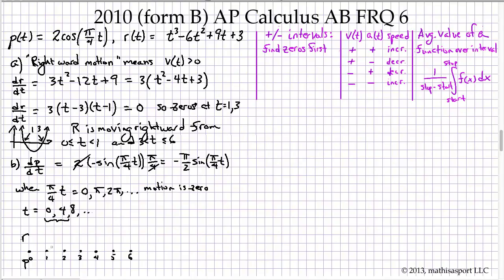Now, what did we learn about R? We learned that R was positive from 0 to 1. It was also positive from 3 to 6. And therefore, it was negative from 1 to 2 and 2 to 3. With P, on the other hand, we have negative values 0 up to 4, and then we have positive values 4 to 6.